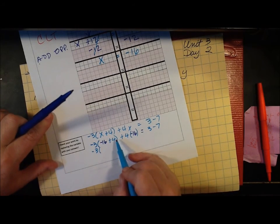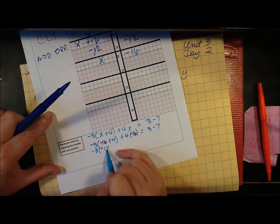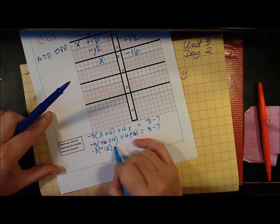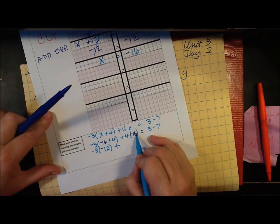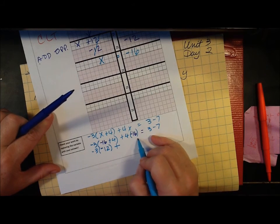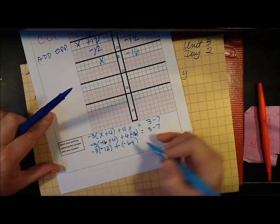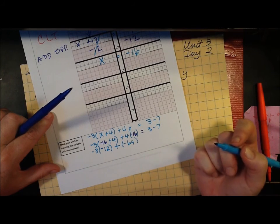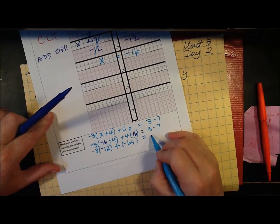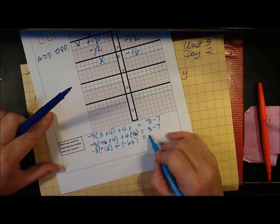Negative 16 plus 4 would be negative 12 plus... 4 times 16 is 64 but it'll be negative. Negative 64. I think we have a problem. Equals negative 4.